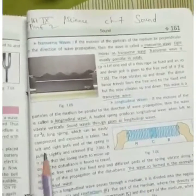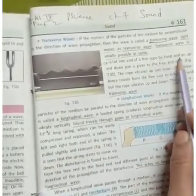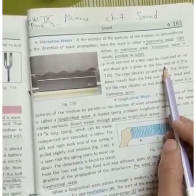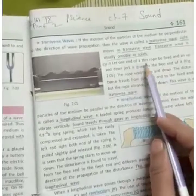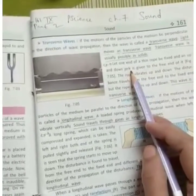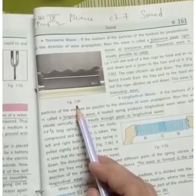One example that we can take of this wave. Let one end of the thin rope be fixed and up and down jerk is given to the free end of it. I mean, we will fix one thin rope and up and down jerk. For this, you can see figure 7.05.